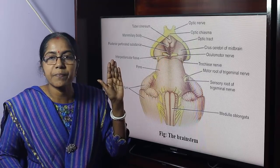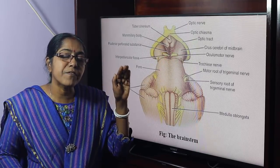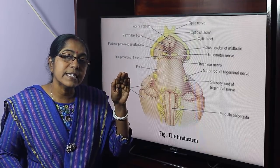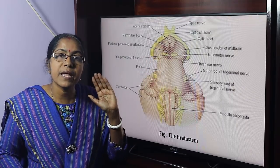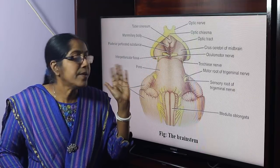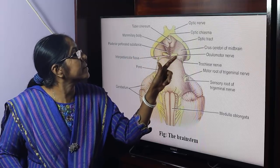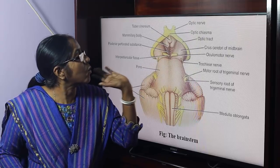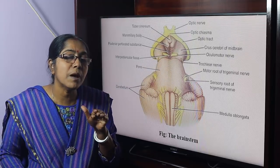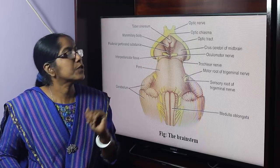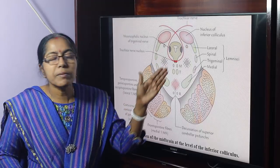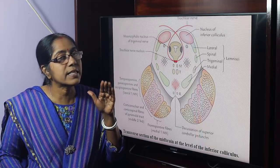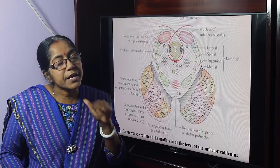The crus cerebri is the central portion of the cerebral peduncle. From before backwards we have: crus cerebri, then substantia nigra, then tegmentum. The midbrain gives origin to the oculomotor nerve and the trochlear nerve, both purely motor nerves. We examine the transverse section of the midbrain at the level of the inferior colliculus.